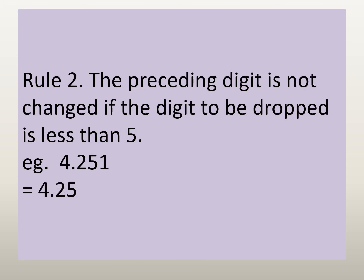Rule 2: the preceding digit is not changed if the digit to be dropped is less than 5. Here we have the example 4.251. The digit to be dropped is 1, which is the third digit, and it is less than 5. So the number when rounded will be 4.25.